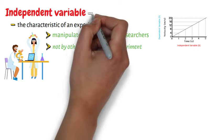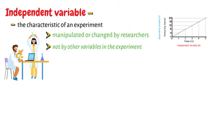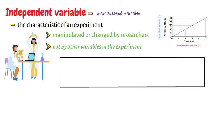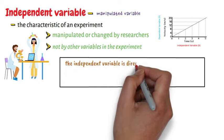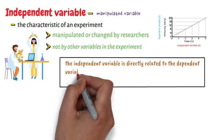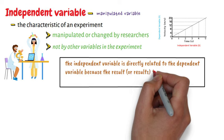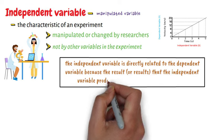For this reason, the independent variable is also known as the manipulated variable. It is important to note that the independent variable is directly related to the dependent variable because the result that the independent variable produces is called the dependent variable.